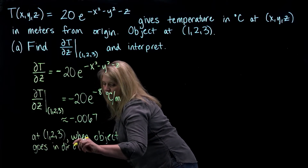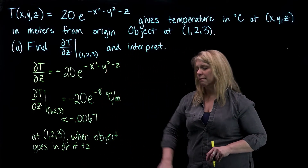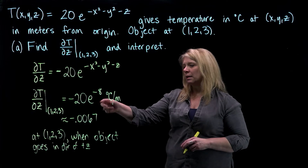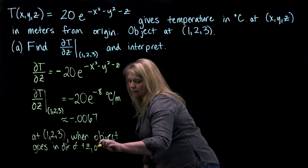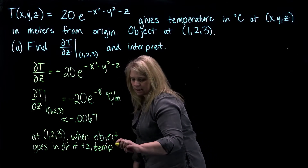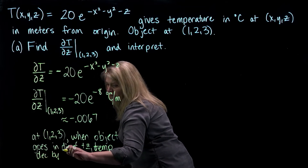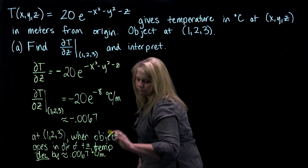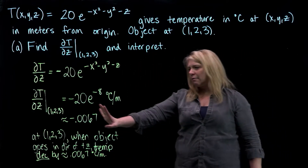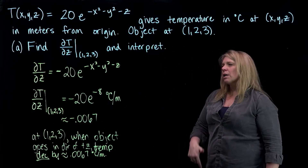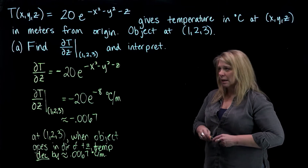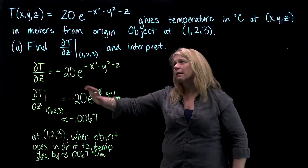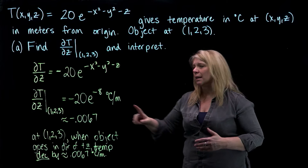This number gives us the rate of change in temperature when the object moves in the z direction. The temperature decreases by approximately 0.0067 degrees Celsius per meter. A negative rate of change means a decreasing output for the function. So for any partial derivative, you're really thinking about: is the function output increasing or decreasing, and by how much, when the object is at the input point and goes in the direction of increasing x, y, or z? That's what partial derivatives represent — they are an example of directional derivatives.